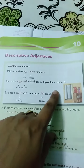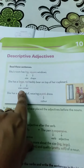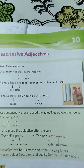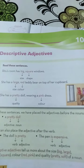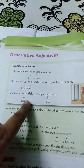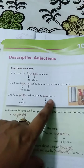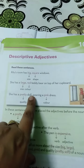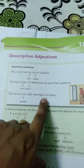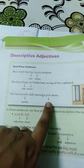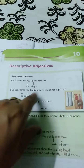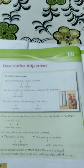'She has a large red teddy bear on top of her cupboard.' Uske upar ek large size aur red color bataya gaya hai — ki teddy ka color kaisa hai aur wo kaisa hai? It is large and red in color. 'She has a pretty doll wearing a pink dress.' Doll ki quality kya hai? It is pretty and wearing a pink dress — dress ka color bataya gaya hai pink. These are the descriptive adjectives.